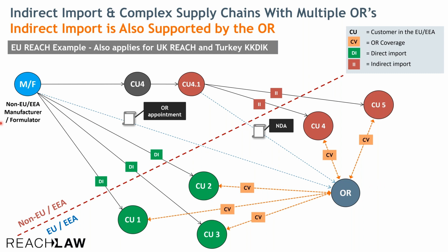If the manufacturer formulator has agreed to cover indirect import, the only representative can proceed. In many cases, this particular actor in the supply chain does not want these customers to be known to the manufacturer, because they might be competitors in some sense. Therefore, in some cases the only representative and this actor outside the said market who supplies these chemical products to this market can enter into a non-disclosure agreement. This means the only representative actually knows more about the whole market for this manufacturer formulator's substance in the EU than the manufacturer formulator themselves, and will not disclose information about these customers to the manufacturer.